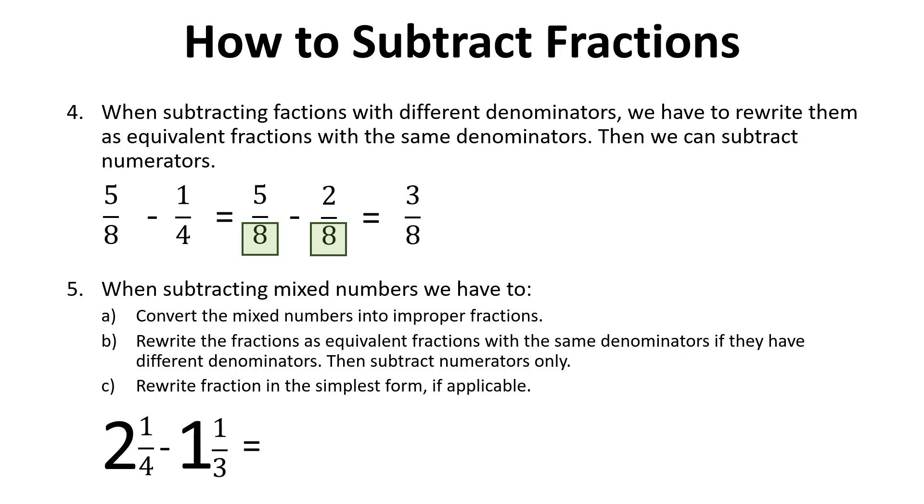For example, 2 and 1 over 4 minus 1 and 1 over 3 equals 9 over 4 minus 4 over 3, and that is equal to 27 over 12 minus 16 over 12 when we rewrite both fractions as equivalent fractions with the same denominator. 27 over 12 minus 16 over 12 equals to 11 over 12.